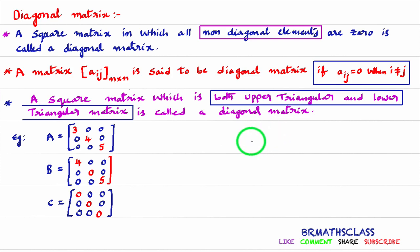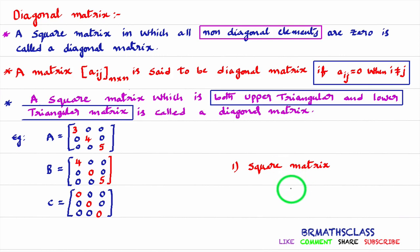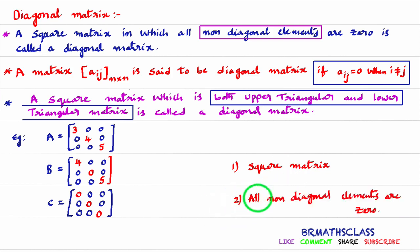Just remember two points in this definition. Point number one: first of all, the matrix must be a square matrix. If the matrix is not a square matrix, it can never be a diagonal matrix. Many students say 'a matrix is said to be a diagonal matrix' — that is wrong. You should start with 'a square matrix is said to be a diagonal matrix.' That is important. Second point: all non-diagonal elements are 0. If a matrix satisfies both conditions, then we say it is a diagonal matrix.